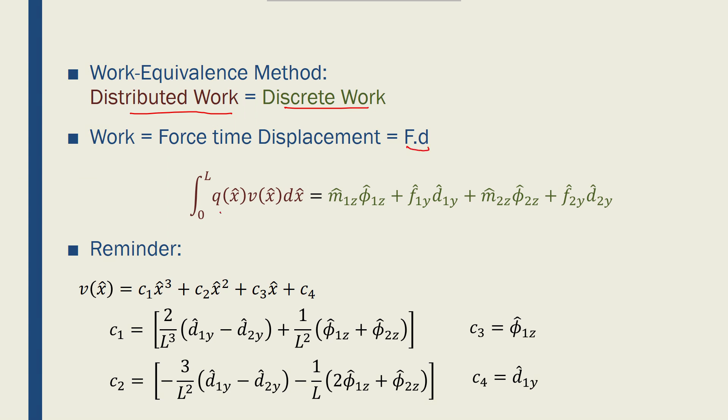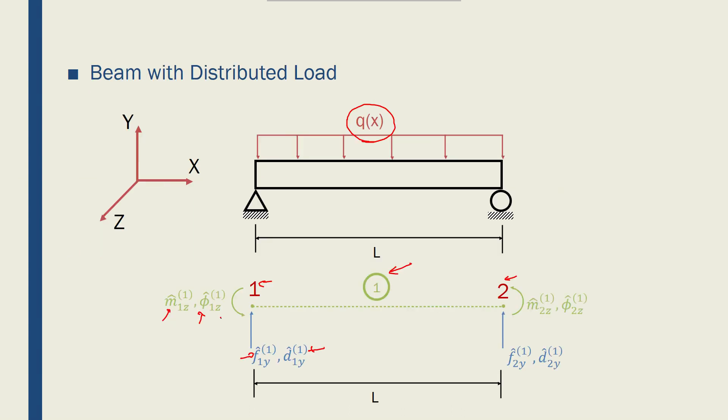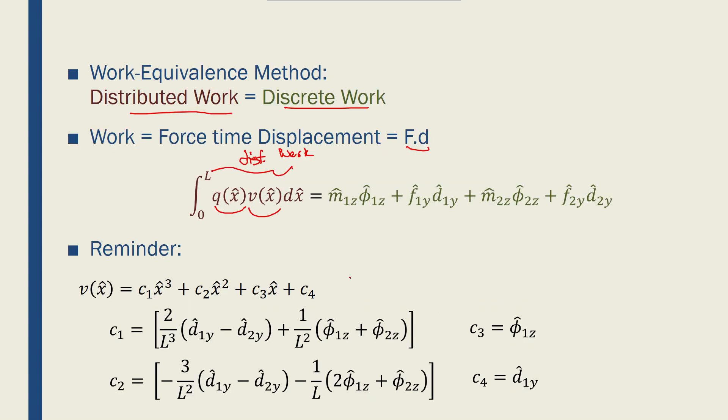Now, we have a distributed force. If you multiply it by the displacement function and integrate it over the length of the beam, it gives us the distributed work. And if I multiply each of these forces by the corresponding displacements, so M by phi and F by d, and add them together, I end up with the discrete work.